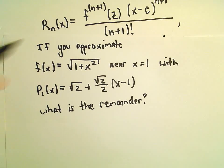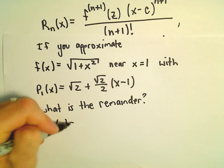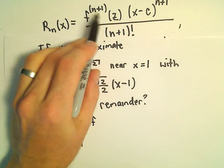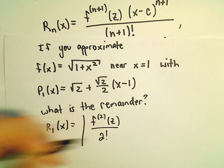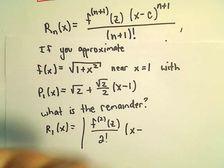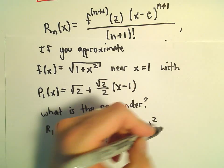Okay, so the remainder associated with a degree 1 polynomial says, well, that's going to be, we'll have to take the second derivative evaluated at z over 2 factorial, and then we'll have x minus our c value, which is positive 1, raised to the second power.